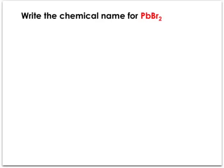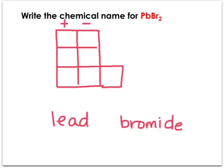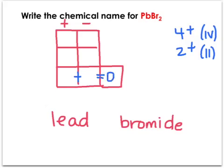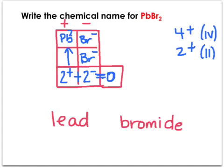One more: look up PB on the periodic table — PB is lead, with choices of plus four and plus two. I need to determine which Roman numeral to use. There are two bromines and one lead. Bromine has a charge of negative one, so adding that column gives negative two, meaning my positive column must be positive two. That one lead must have had a charge of plus two to balance the two bromines — each at negative one — giving lead two bromide.